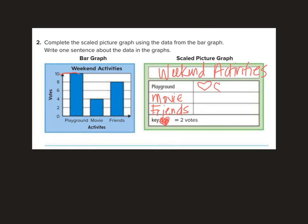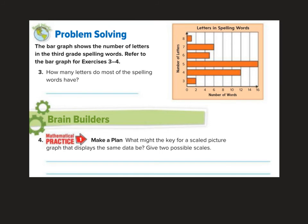One, two, three, four, five. And four people chose movie. If each heart is two votes, then I need to do two hearts. And eight chose friends. Two, four, six, eight. So notice how I tried making them all about the same size and I kind of tried stacking them on top of each other as best I could so it's easy to look at to compare. So there we have our scaled picture graph.